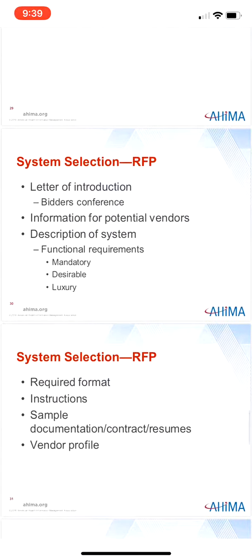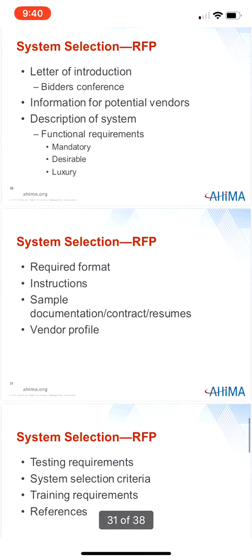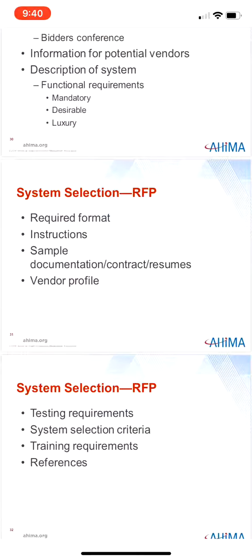The RFP is a much more detailed document than the RFI and is critical in the selection process. The purpose of the RFP is to give the vendor all the information needed to propose an IS that meets the needs of the healthcare facility. Common components of the RFP include: the letter of introduction, information for potential vendors including bidders conference details, description of the healthcare facility, patient or volume statistics, description of the system including technical, functional, and interface requirements, the required format of the response, instructions for the RFP, requests for sample documentation, a sample contract, a vendor profile, system testing requirements, sample resumes of implementation staff, system selection criteria, training requirements, and references. Appendix A shows a detailed template for an RFP.